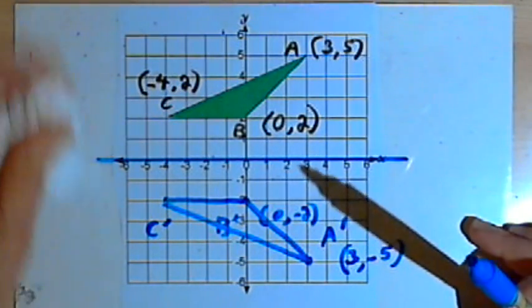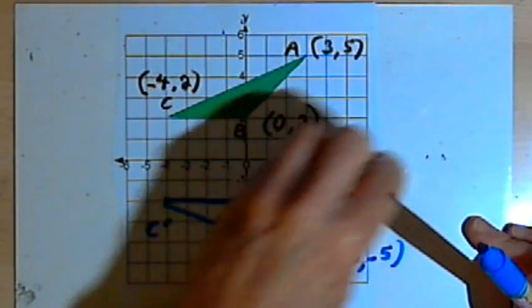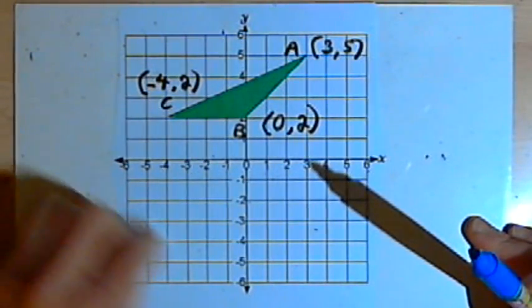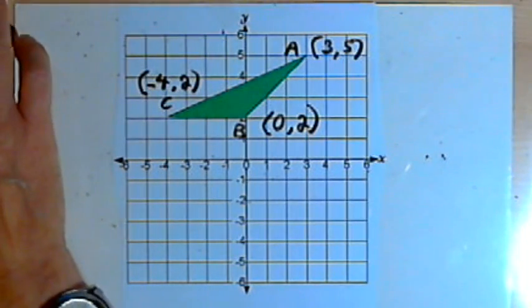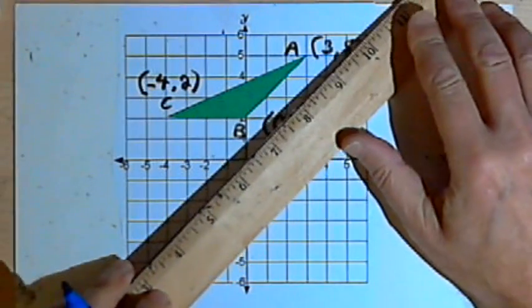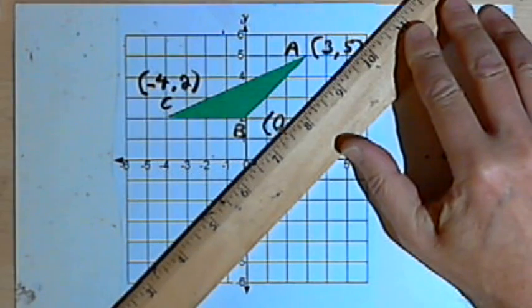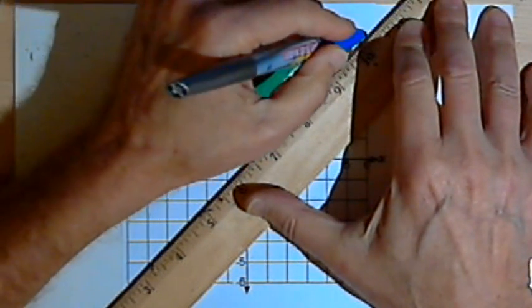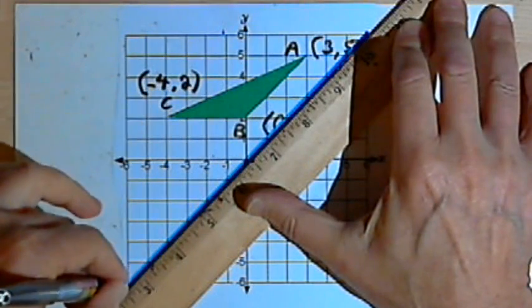Now, I also want to reflect this across the diagonal x equals y. So let me draw that diagonal in. That's going to go straight through the origin, and it should be about like this.